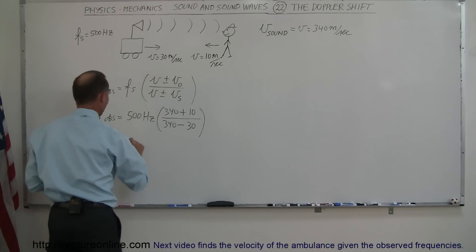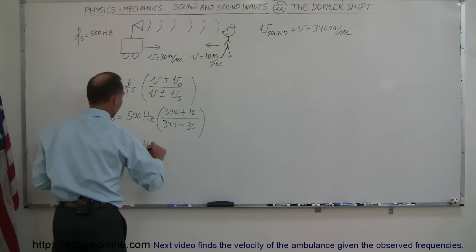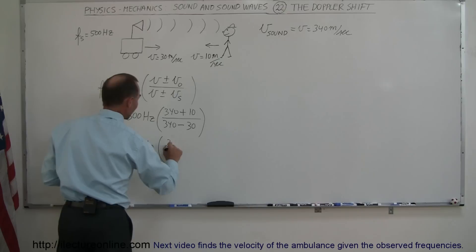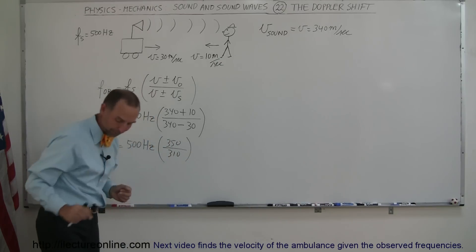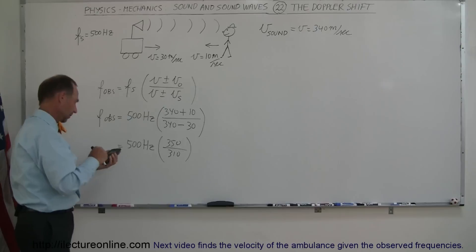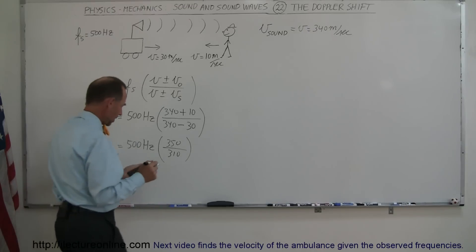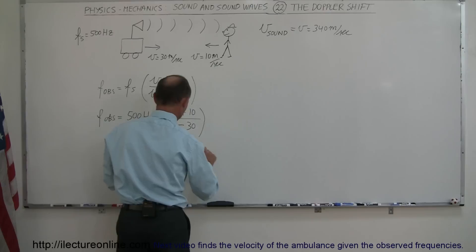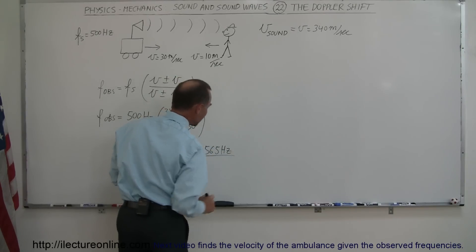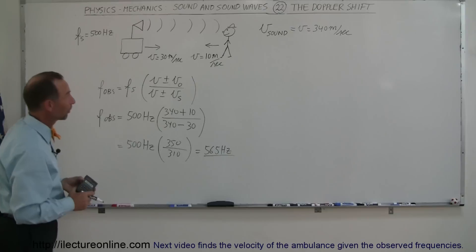So that means that the frequency observed is 500 Hertz times 350 in the numerator divided by 310 in the denominator. And let's find out what that is. 500 times 350 divided by 310 equals, and that would be 565 Hertz. That would be the observed frequency in this particular case.